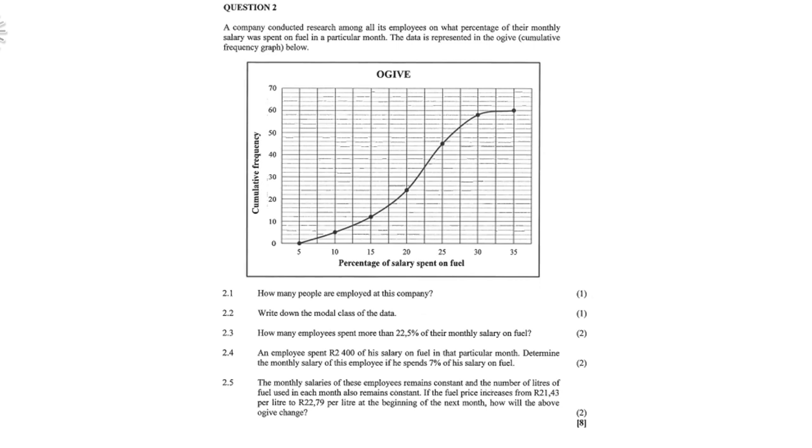How many employees spend more than 22.5% of their monthly salary on fuel? An employee spends 2400 rand of his salary on fuel in that particular month, determine the monthly salary of this employee if he spends 7% of his salary on fuel. The monthly salary of these employees remains constant and the number of liters of fuel used in each month also remains constant. If the fuel price increased from 21.43 per liter to 22.79 per liter at the beginning of next month, how will the above OGIVE change?